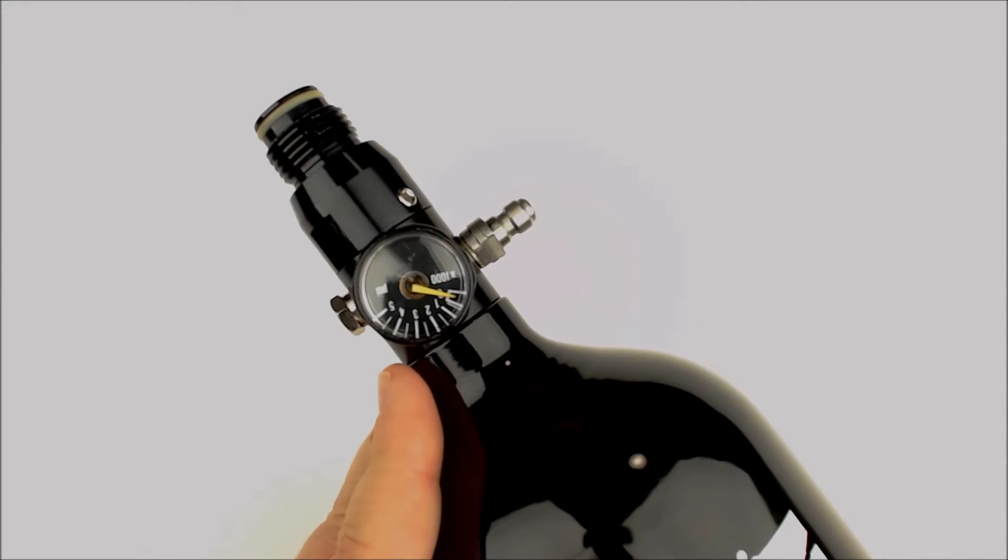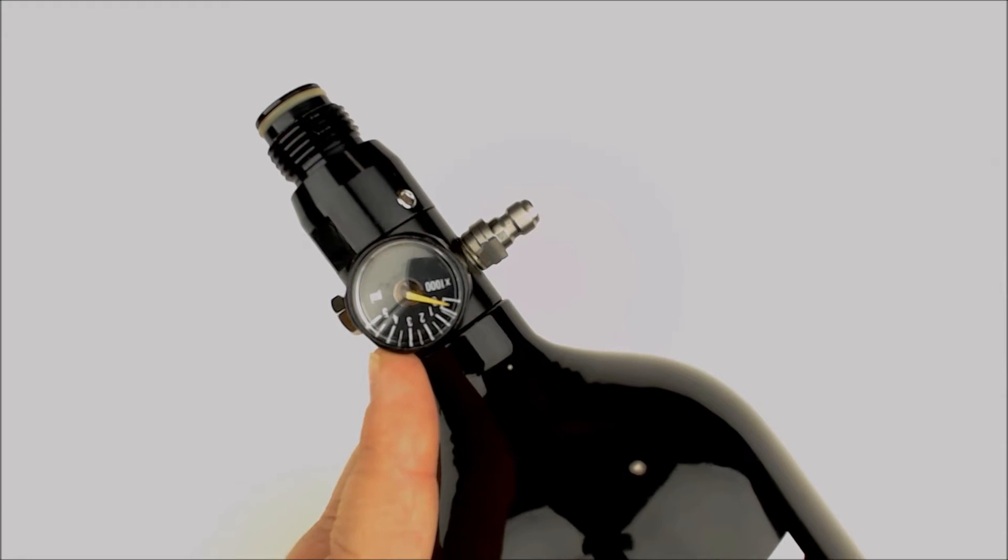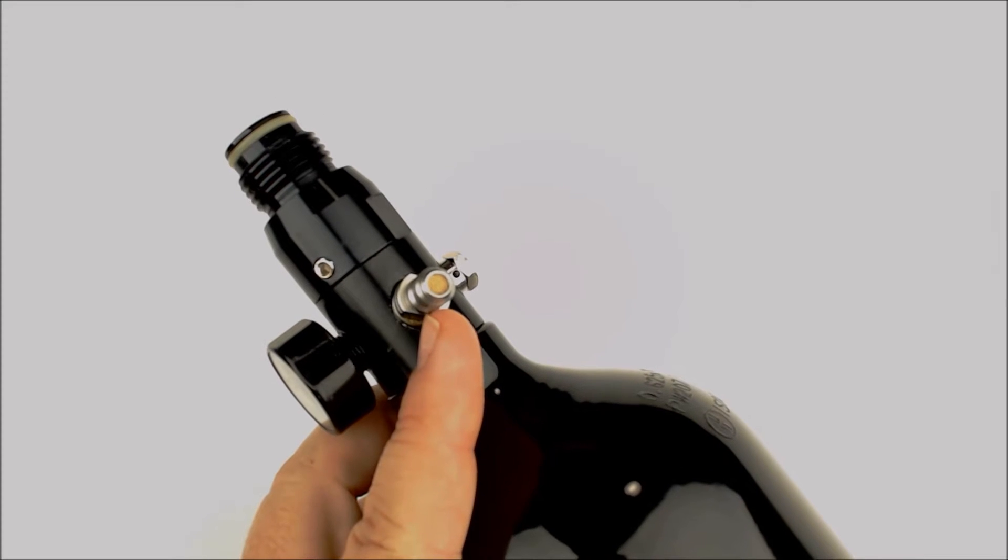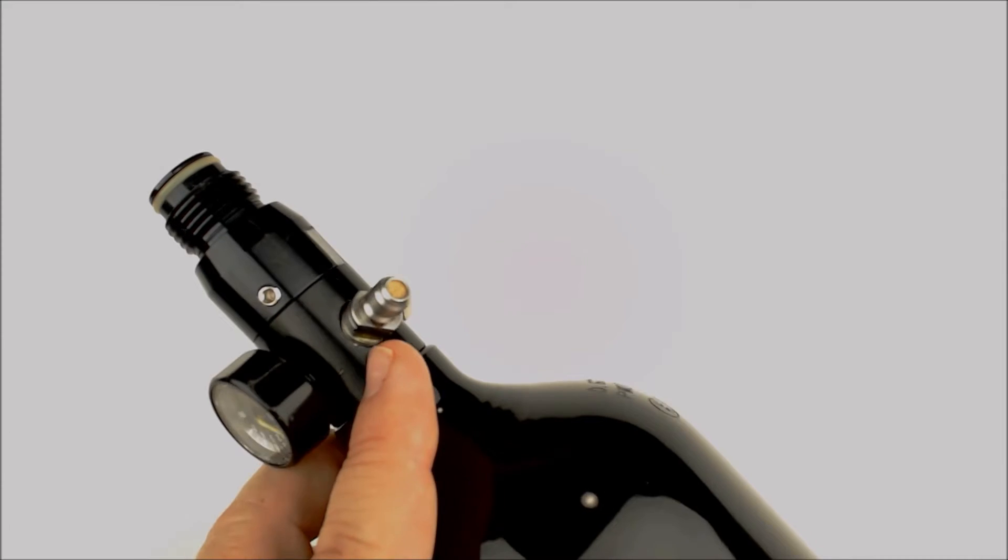Turning around here is a gauge. This shows the pressure in the tank, not the output pressure, but the pressure that the tank has been filled to. And then finally a fill nipple. You might be able to notice there's a filter. It keeps dirt and debris out of the tank.